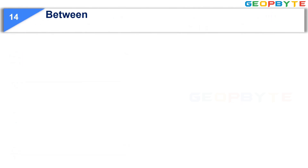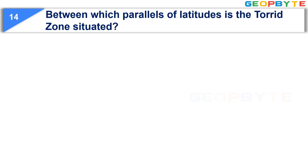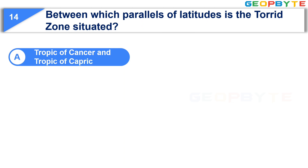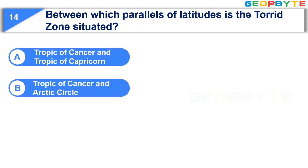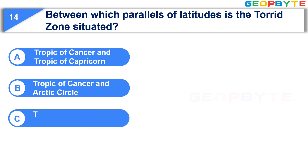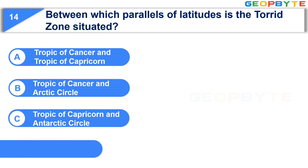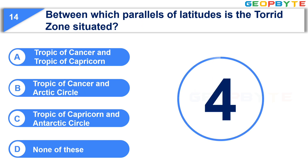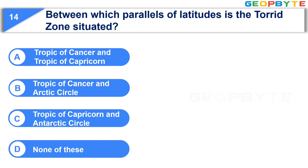The next question is: between which parallels of latitudes is the torrid zone situated? Option A: Tropic of Cancer and Tropic of Capricorn. Option B: Tropic of Cancer and Arctic Circle. Option C: Tropic of Capricorn and Antarctic Circle. The correct answer is Option A: Tropic of Cancer and Tropic of Capricorn.